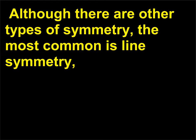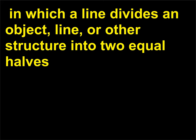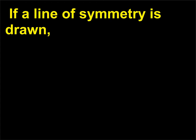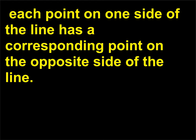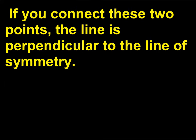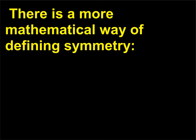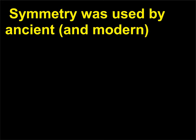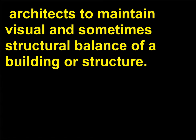Although there are other types of symmetry, the most common is line symmetry, in which a line divides an object or structure into two equal halves. An example in nature would be the wings of a butterfly. If a line of symmetry is drawn, each point on one side of the line has a corresponding point on the opposite side, and if you connect these two points, the line is perpendicular to the line of symmetry. More mathematically, two points are symmetric about a line if the line is the perpendicular bisector of the segment joining the two points. Symmetry was used by ancient and modern architects to maintain visual and sometimes structural balance of a building or structure.